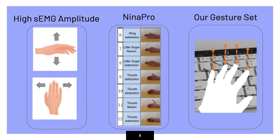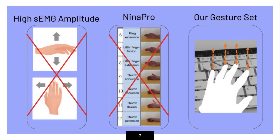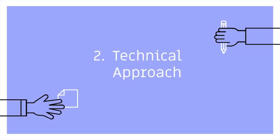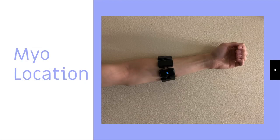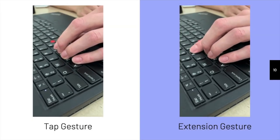Therefore, we will be focusing on a unique gesture set that consists of convenient and natural movements. Our Myo armband was placed at a specific position on the forearm throughout both data collection and interfacing. After initial testing, the Myo armband was seen to gather the maximal sEMG signals from this location. Within our design, the Myo armband was placed on the left arm.